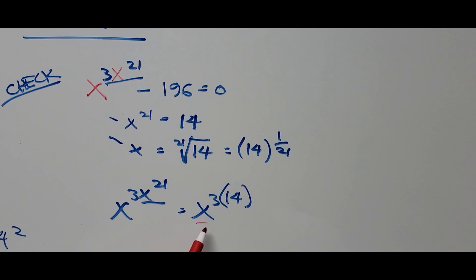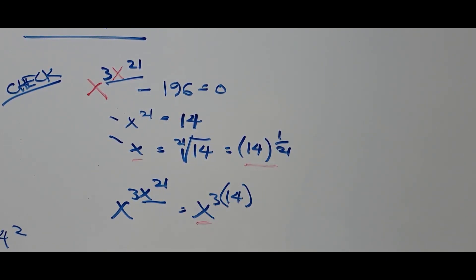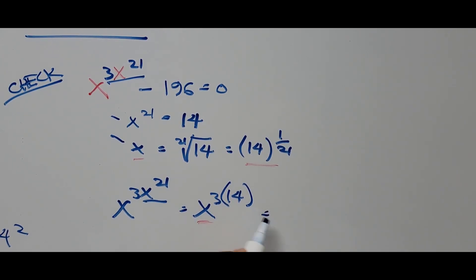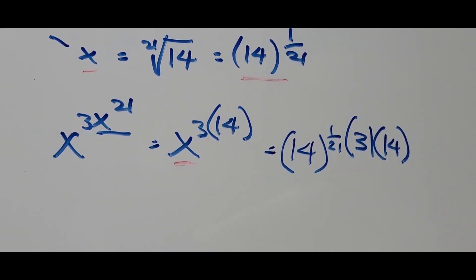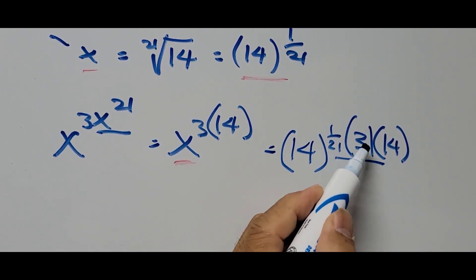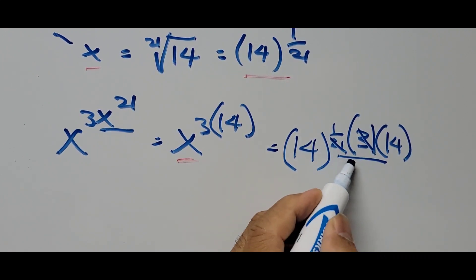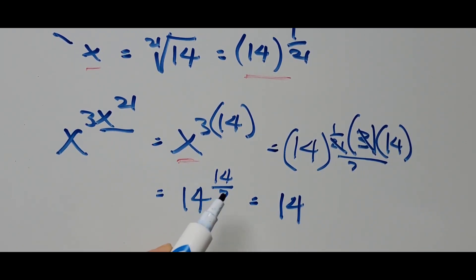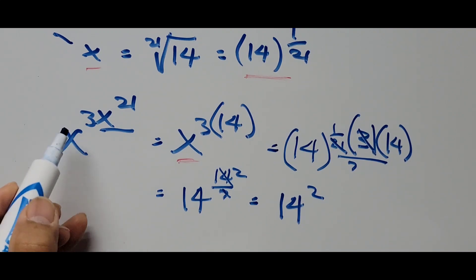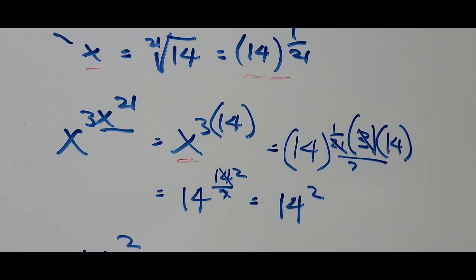And here, substituting the value of x — x is 14 raised to exponent 1 over 21 — this becomes 14 raised to 1 over 21, times 3, times 14. Simplifying this exponent: that is 3 divided by 21, which comes to 7. So this is equal to 14 raised to 14 divided by 7. From here, 14 divided by 7 is 2, so that's 14 squared. So x raised to 3x to the 21 equals 14 squared, going back to the original equation.